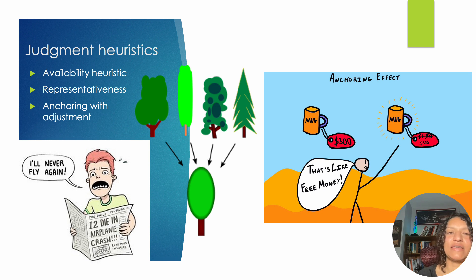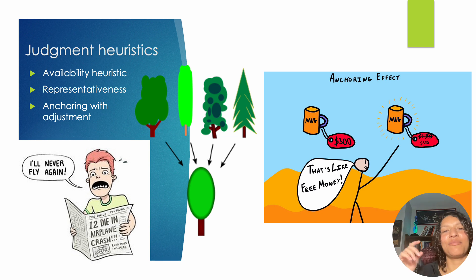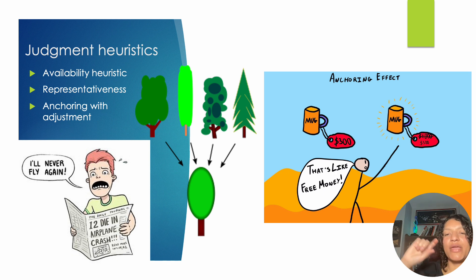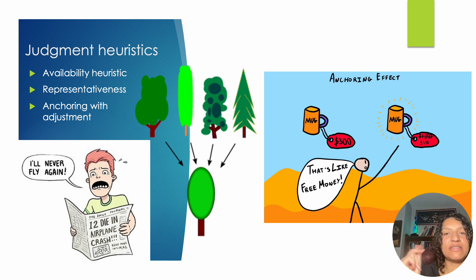Another example of a heuristic is anchoring — often a sales technique. You've probably seen things marked 'for sale' where it's off by a big percentage and you're going to save all this money. Usually they've maybe marked it up first and then marked it down, so it's not actually a sale. But that ends up anchoring us — we think, 'I'm getting such a great price.' So heuristics can be really helpful or help us make snap decisions, but in therapy settings they can be pretty harmful.